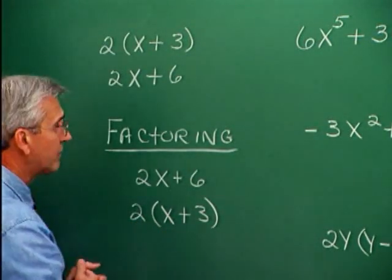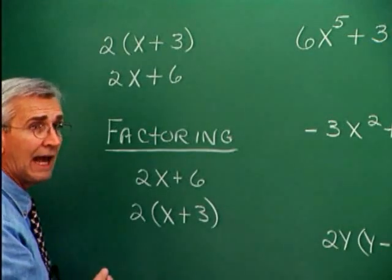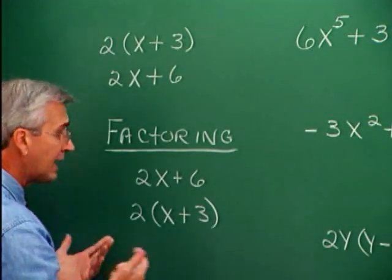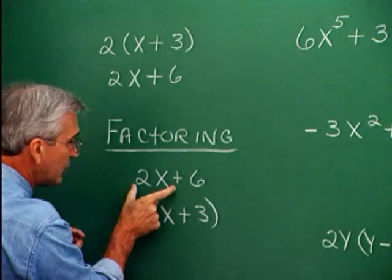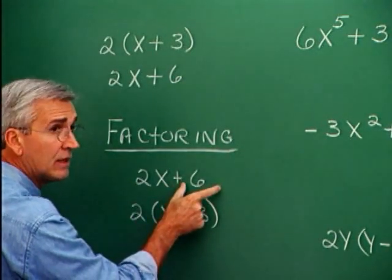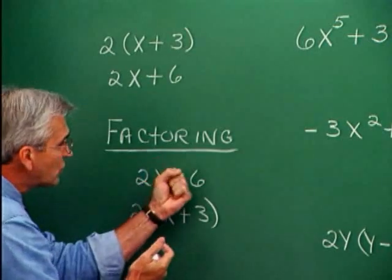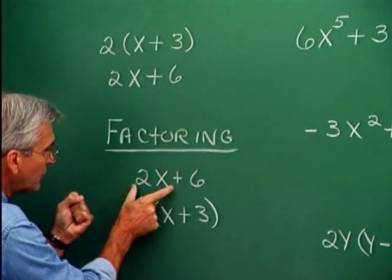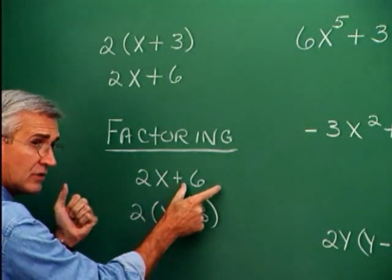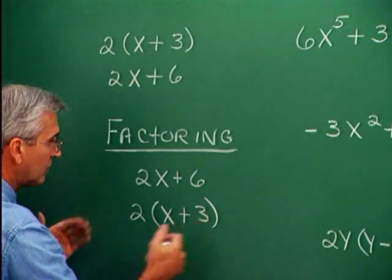Factoring takes a number of different forms, and this form is called taking out a common monomial factor. We recognize that 2 is a factor in this term and 2 is a factor in this term — that is, 6 is 2 times 3. So we snag that 2 out of the 2x leaving x, snag the 2 out of the 6 leaving a 3, and we have our factored form.